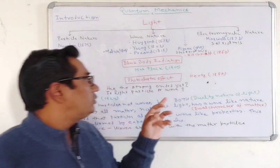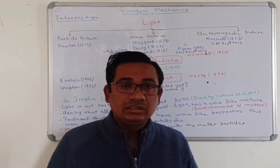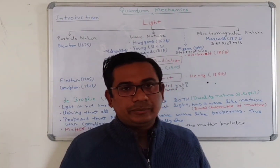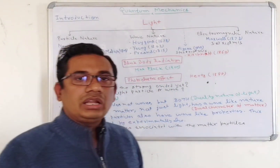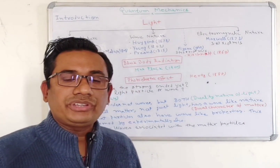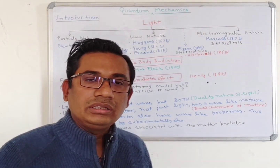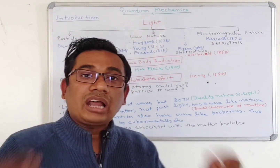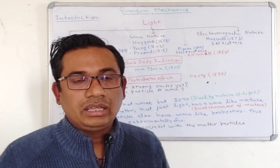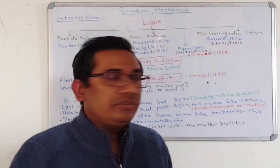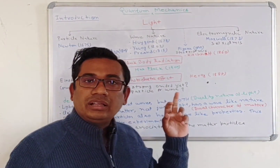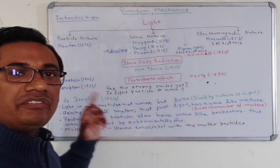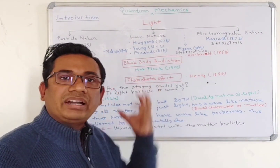The photoelectric effect was first observed by Hertz in 1887, but Hertz could not explain the results satisfactorily. Einstein then provided a simple explanation with the help of Planck's concept. He assumed that light is not only absorbed or emitted in quanta, but also travels in the form of quanta. Einstein in 1905 explained the photoelectric effect results. And in 1923, Compton proposed the Compton effect, which also explained the particle nature of light.